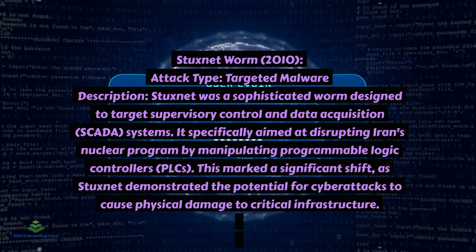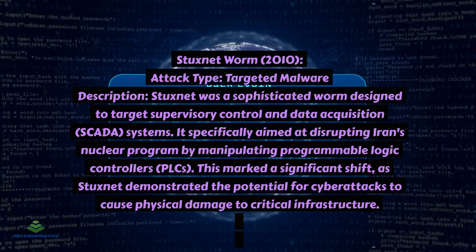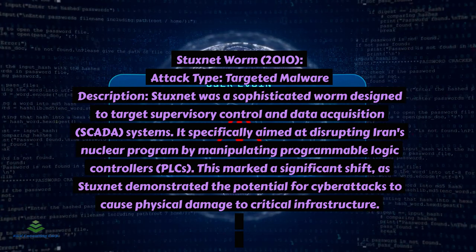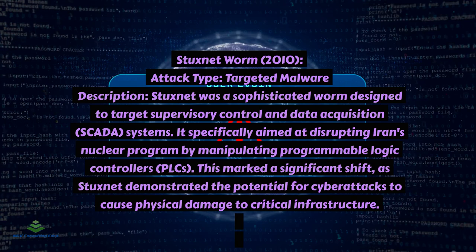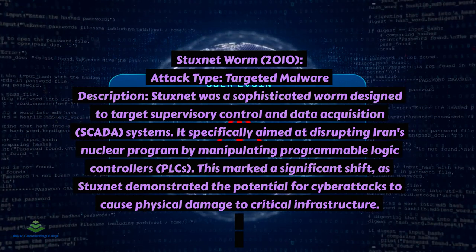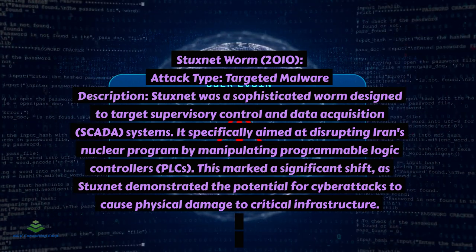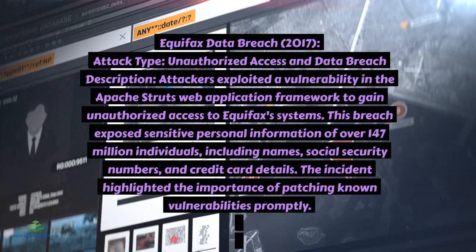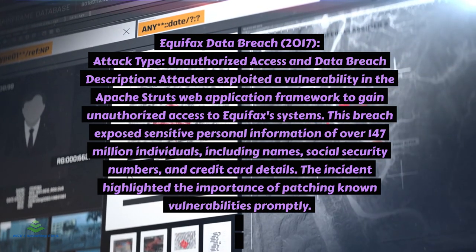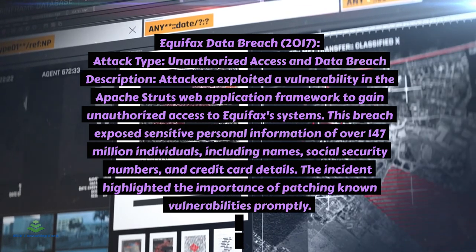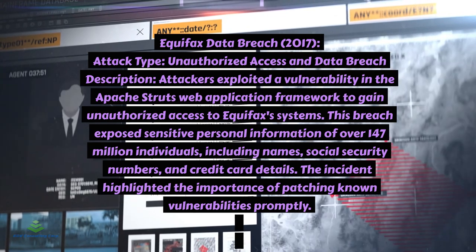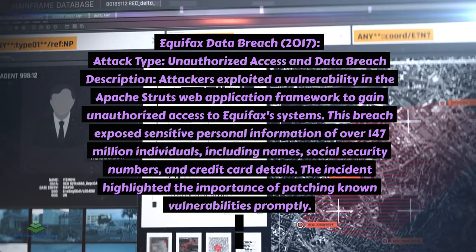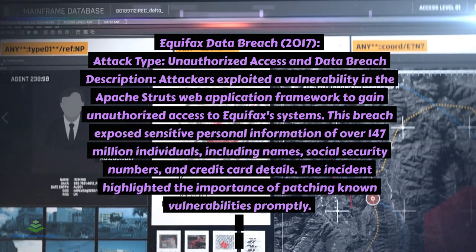Stuxnet worm, 2010 — attack type: targeted malware. Stuxnet was a sophisticated worm designed to target supervisory control and data acquisition (SCADA) systems, specifically aimed at disrupting Iran's nuclear program by manipulating programmable logic controllers (PLCs). This marked a significant shift, as Stuxnet demonstrated the potential for cyberattacks to cause physical damage to critical infrastructure. Equifax data breach, 2017 — attack type: unauthorized access and data breach. Attackers exploited a vulnerability in the Apache Struts web application framework to gain unauthorized access to Equifax's systems, exposing sensitive personal information of over 147 million individuals, including names, social security numbers, and credit card details. The incident highlighted the importance of patching known vulnerabilities promptly.